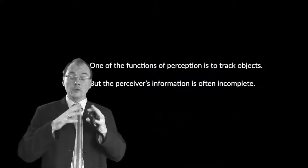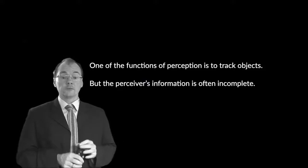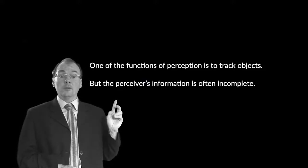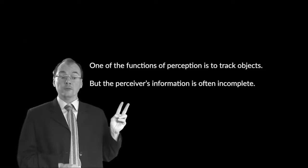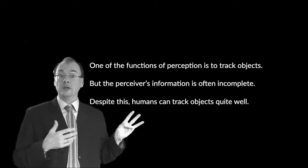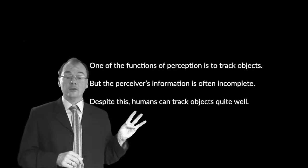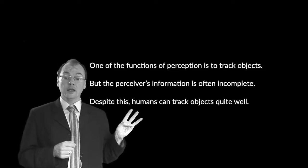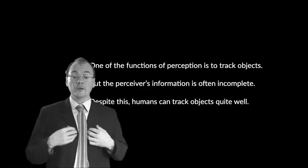And if you're interested, Scholl and Pylyshyn have a whole variety of different conditions where they're investigating what sort of factors will interfere with the ability to track moving objects. Our interest though is just very, very abstract relative to theirs. One of the functions of perception is to track objects. But your information is often incomplete. Despite this, you, like all humans, most humans can track objects pretty well, even on the basis of really quite incomplete information. Well done, you.